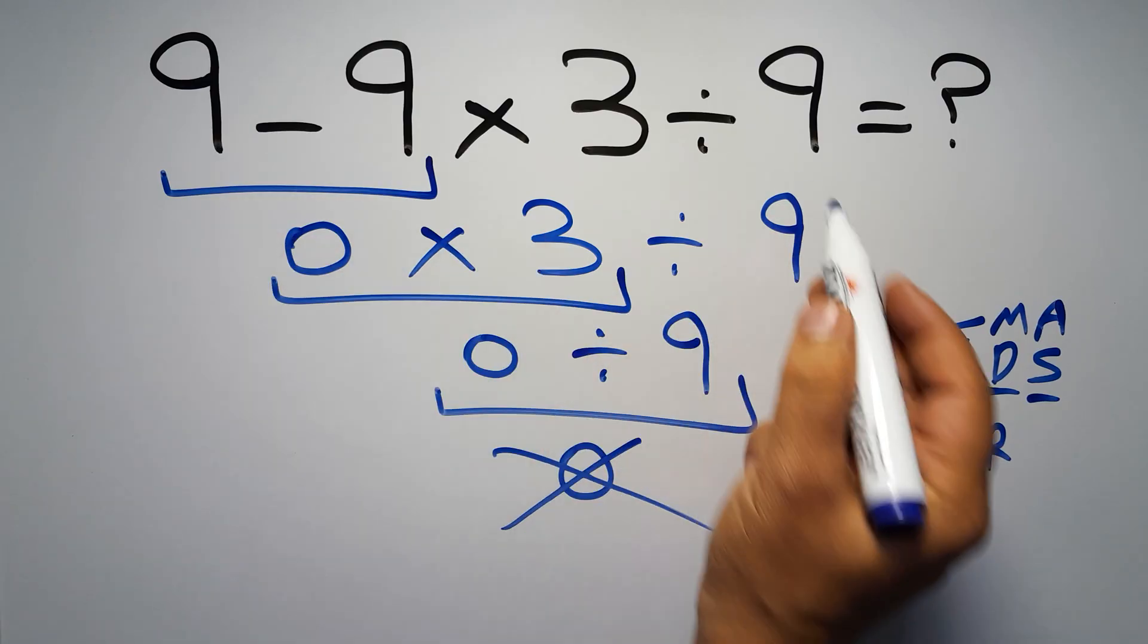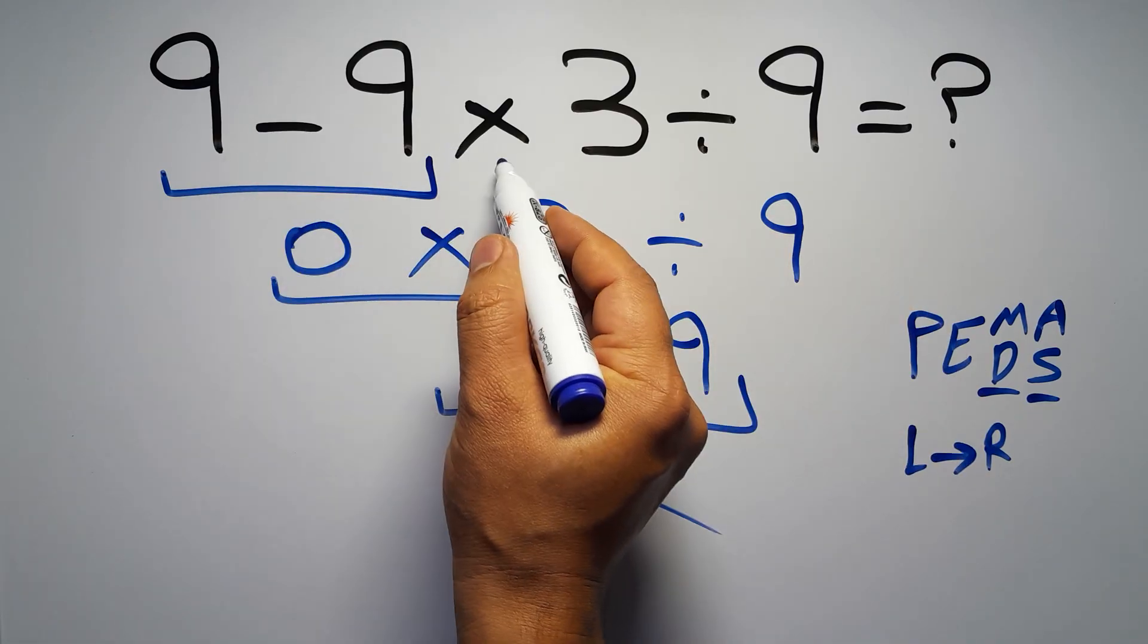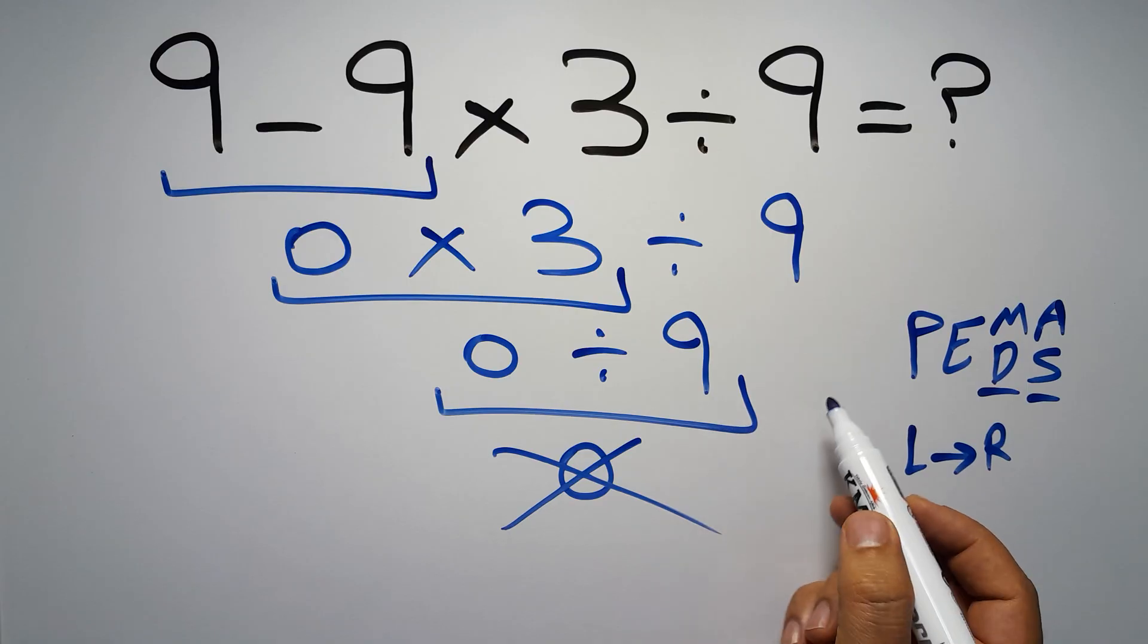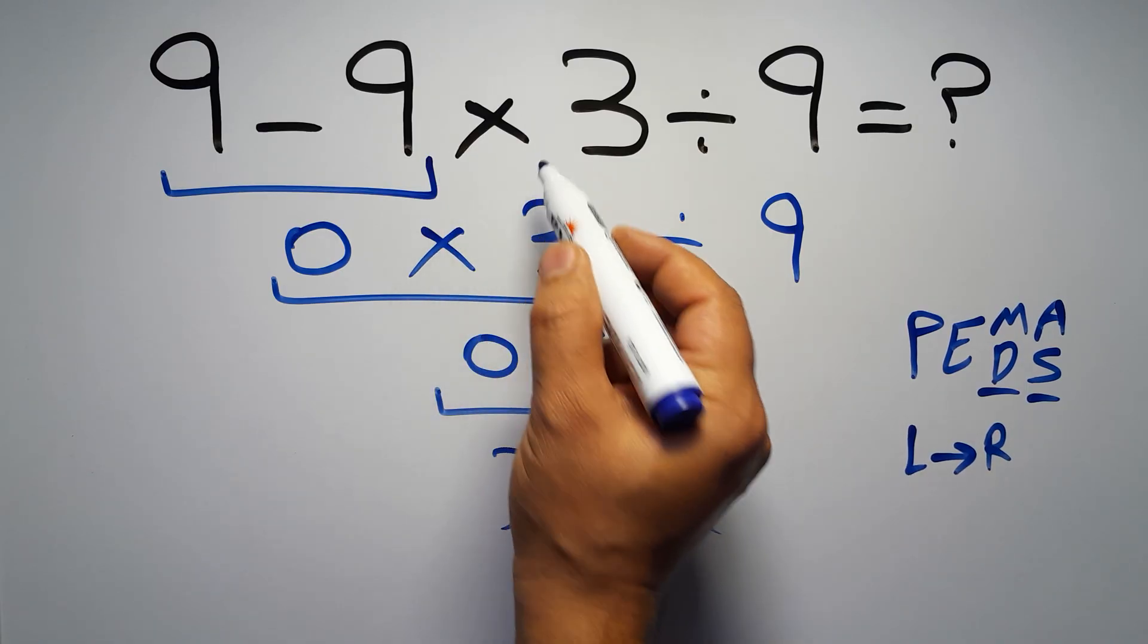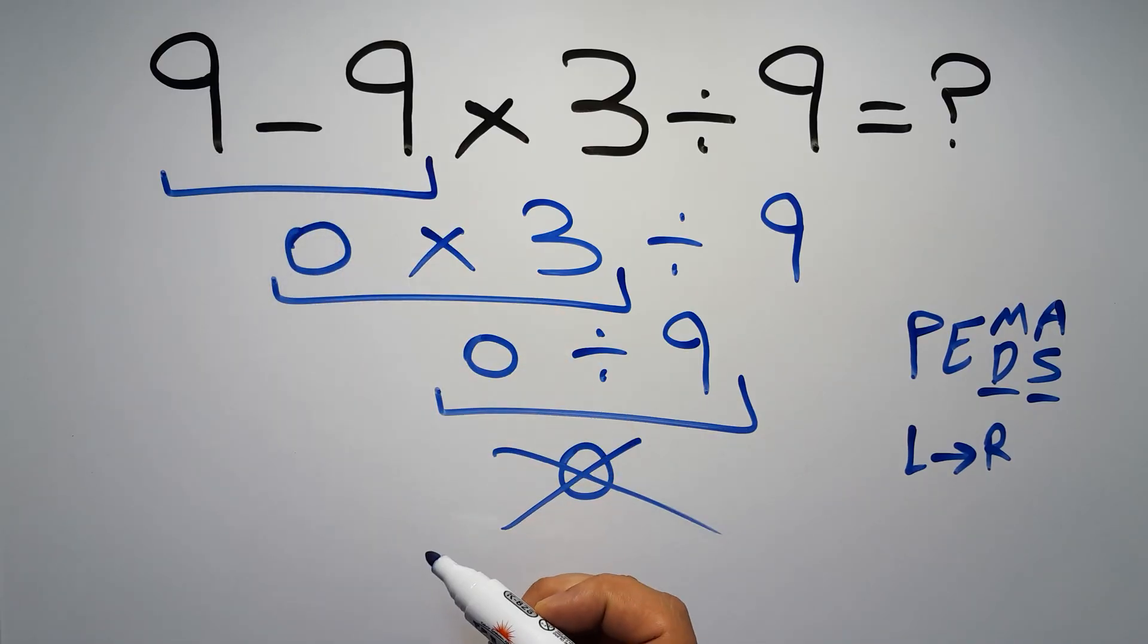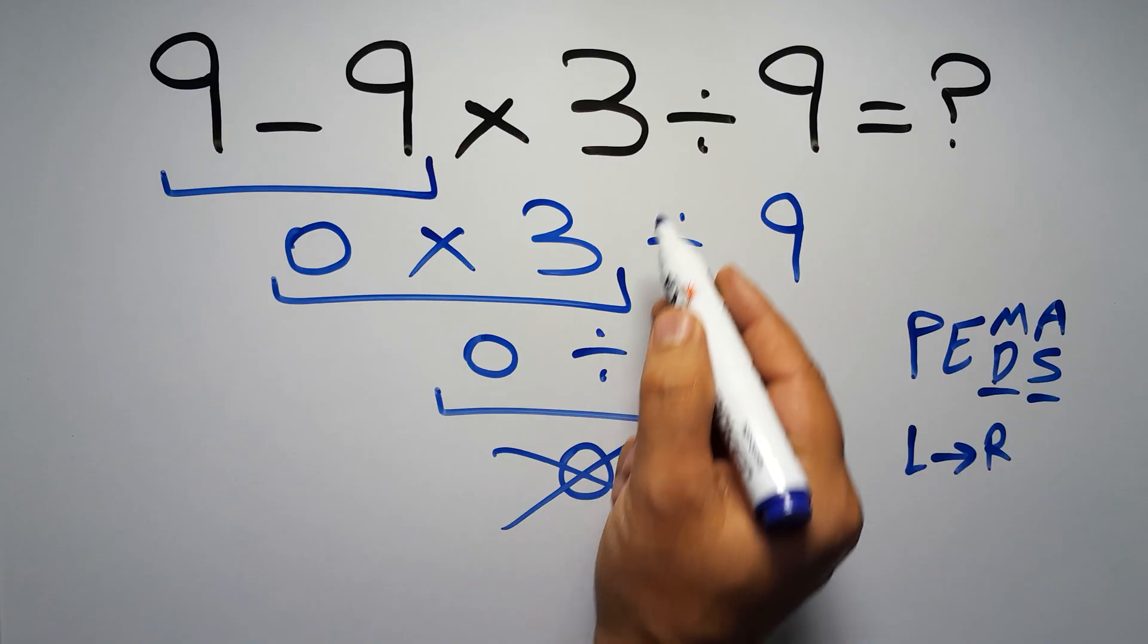In this expression we have one subtraction, one multiplication, and one division. According to the PEMDAS, first we have to do this multiplication, then this division, and finally this subtraction. If we do this subtraction before this multiplication or this division, it is wrong.